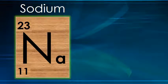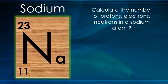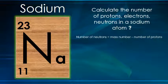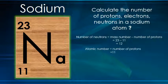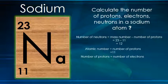Now there is another example of sodium. Calculate the number of protons, electrons, and neutrons in a sodium atom. The number of neutrons equals mass number minus number of protons: 23 minus 11 equals 12 neutrons. The atomic number equals the number of protons, which is 11, and the number of electrons is also 11.